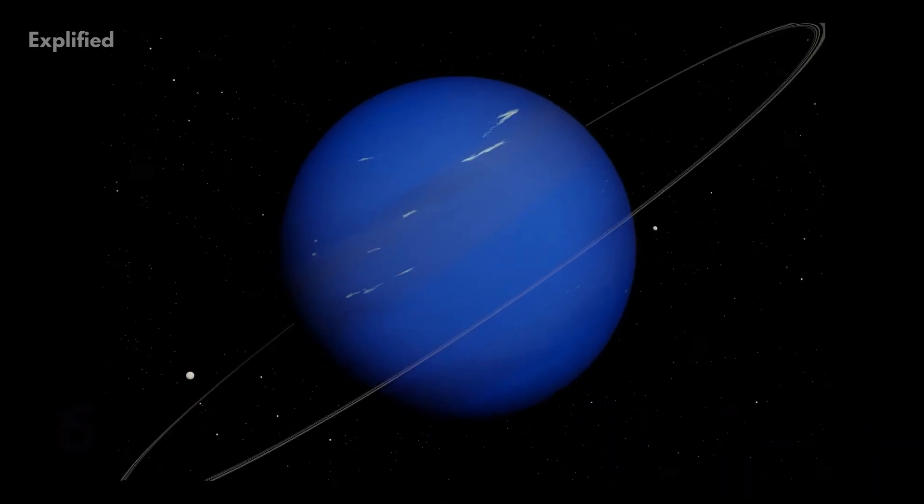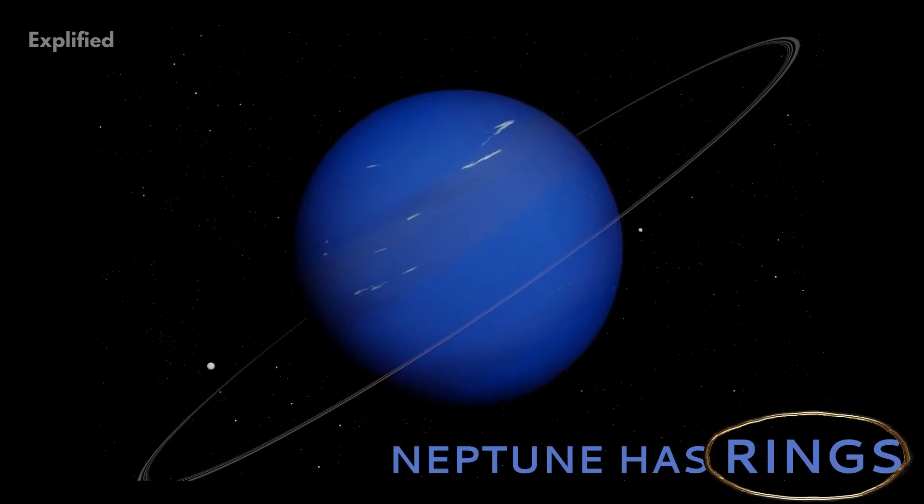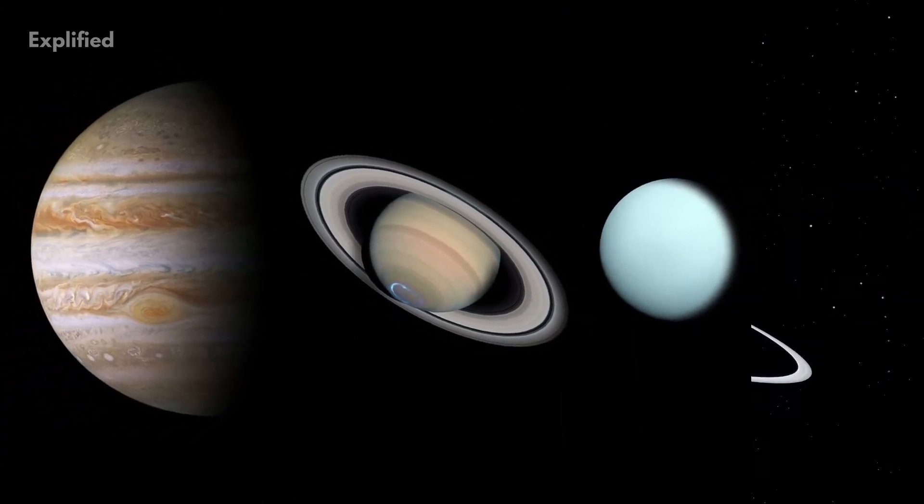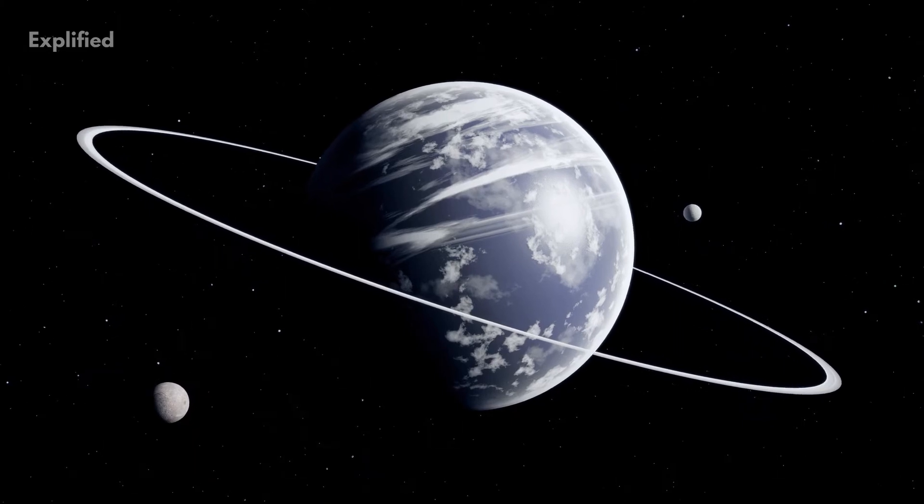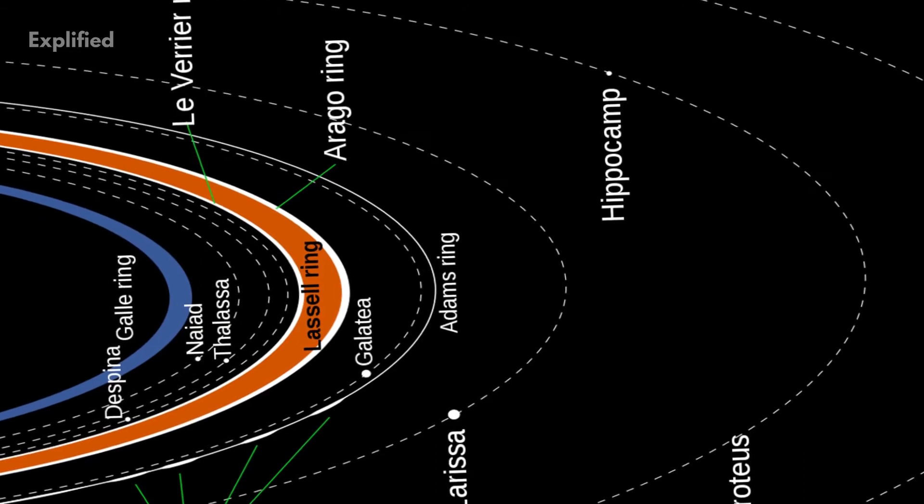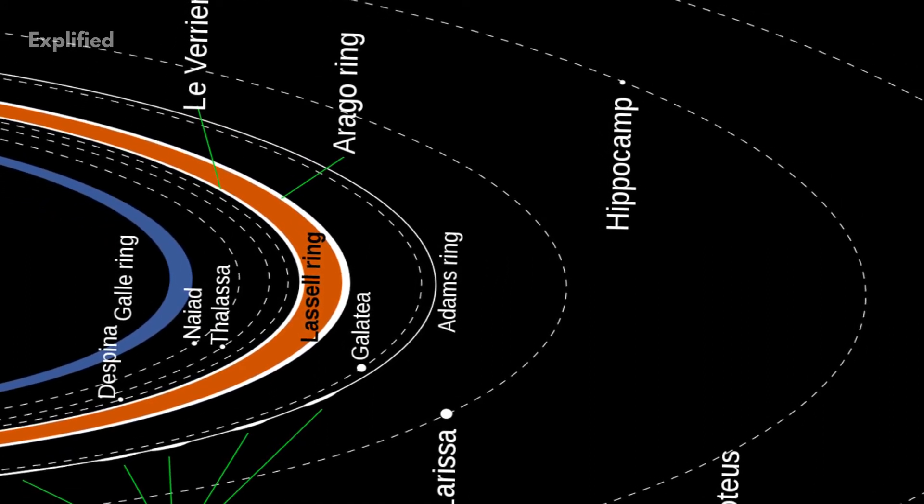Number 6. Neptune has rings. Neptune is the smallest of the four gas giants of the solar system. This planet is also known to have very faint rings which are six in number, all named after people who made notable contributions in the discovery of Neptune.